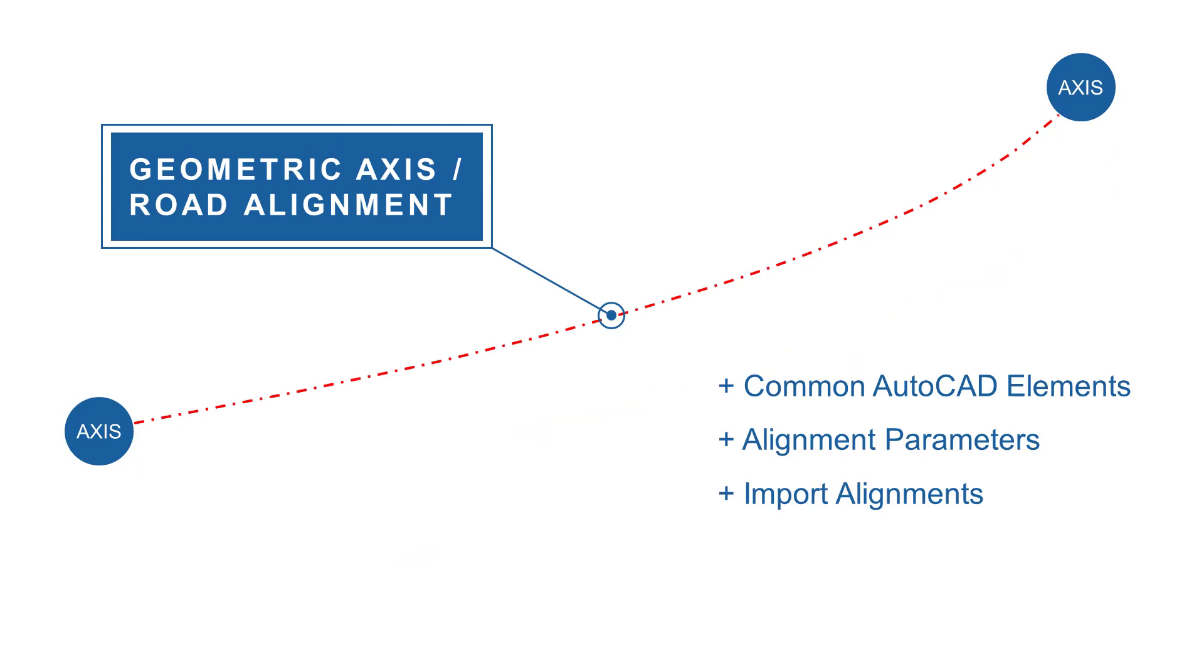The concept behind the parametric modeling in AutoCAD and SOFiSTiK is straightforward. It is mainly built on a geometric axis as a backbone. So the first element we need is the geometric axis or the road alignment. The preferred option to create the geometric axis is using road alignment parameters such as straight lines, arcs or transition curves.